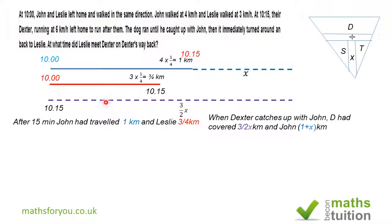This equals three over two X kilometers that Dexter had covered, so X equals two. Because we know that every 15 minutes is one kilometer for John, two kilometers would be 30 minutes. So John covers this extra distance X in 30 minutes, which means the time Dexter meets John is 10:45.